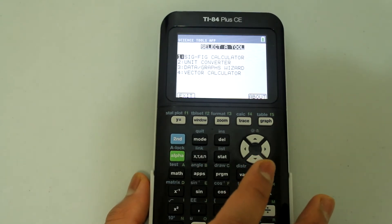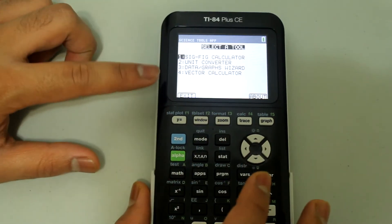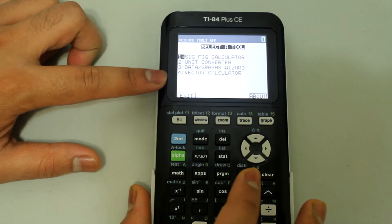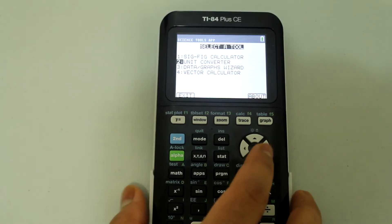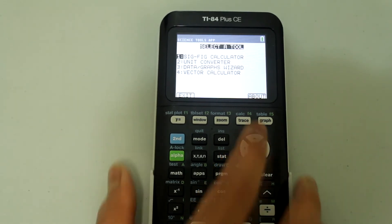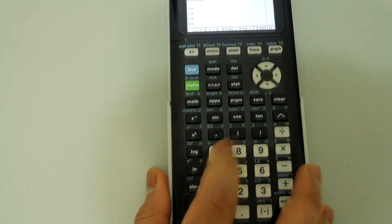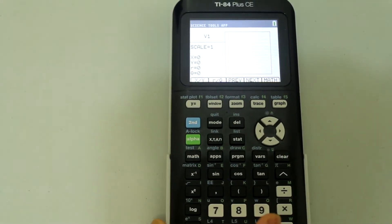Afterwards we're taken to a screen that says select a tool. The one we're interested in is option four, vector calculator. You can either scroll down and press enter or you can just hit number four and that takes you directly to the vector calculator.